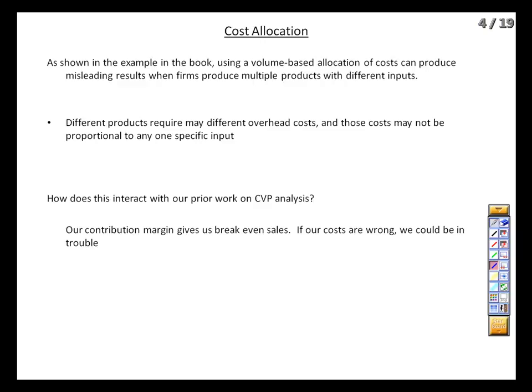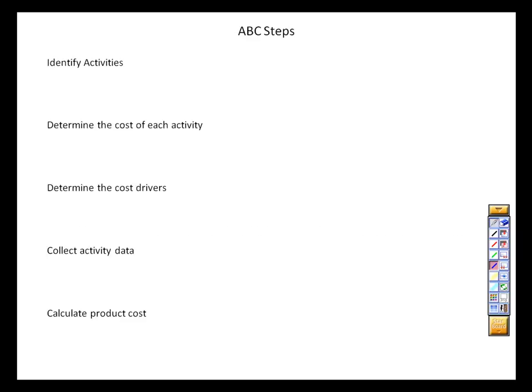If our calculations are based on a certain cost allocation and that's wrong, we're going to be in trouble. So let's go through the ABC process, first in the abstract, and then we'll work out a numerical example that reinforces the example in the book.